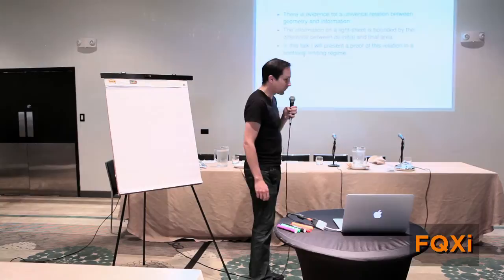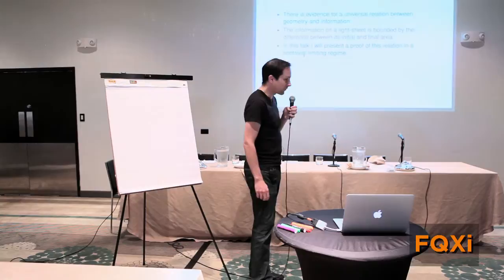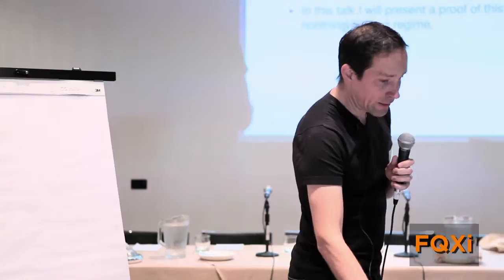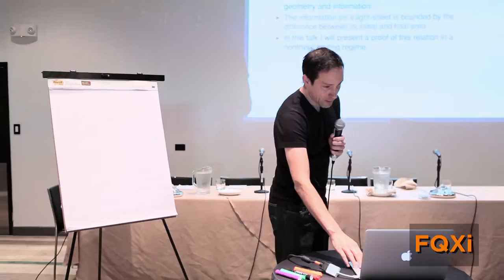So this goes back to some of my own work from about 10, 15 years ago. There's evidence that there's a universal relation between geometry and information. This relation could be described by this sentence: The information on a light sheet is bounded by the difference between its initial and final area. And in this talk, I will give a proof of this statement in a certain non-trivial but limited regime. And of course, I need to start by reviewing what the red sentence is actually supposed to mean in detail. It's a statement of the covariant entropy bound.